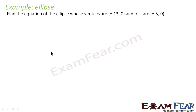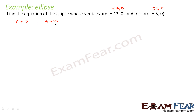Here we have to find the equation of an ellipse whose vertices are ±13, 0 and foci are ±5, 0. We know foci is always ±c, 0 and vertices are always ±a, 0. That means c is equal to 5 and a is equal to 13. We know b is the square root of a² minus c².